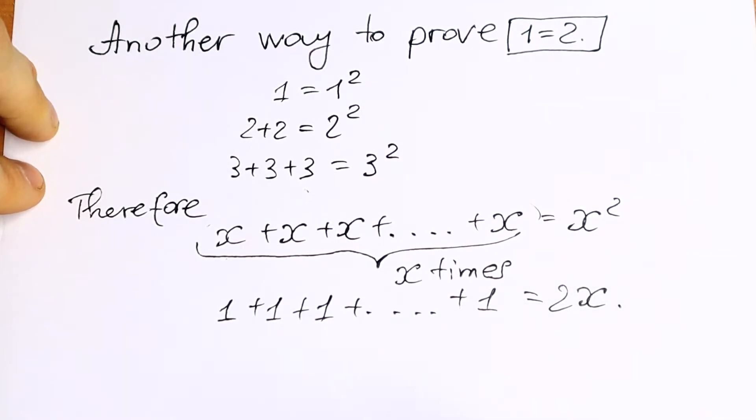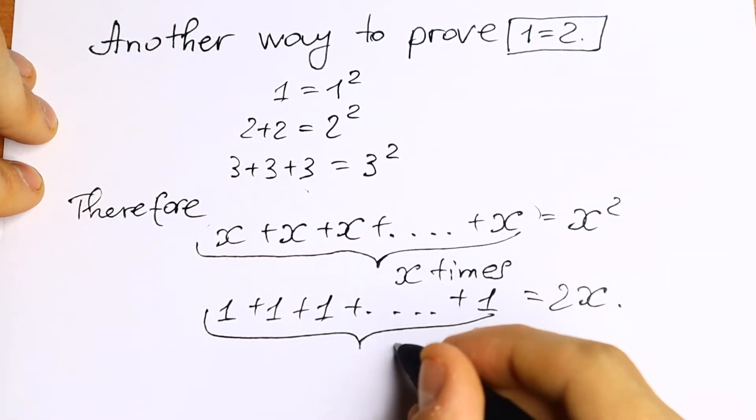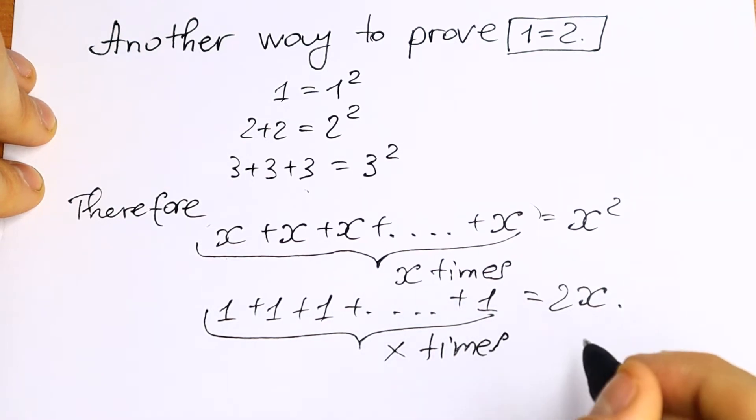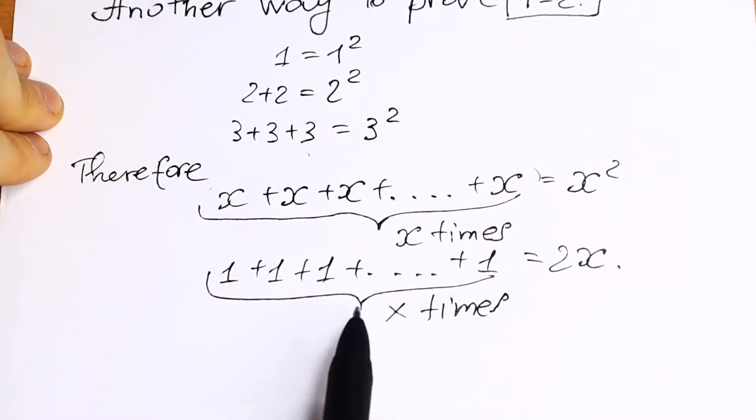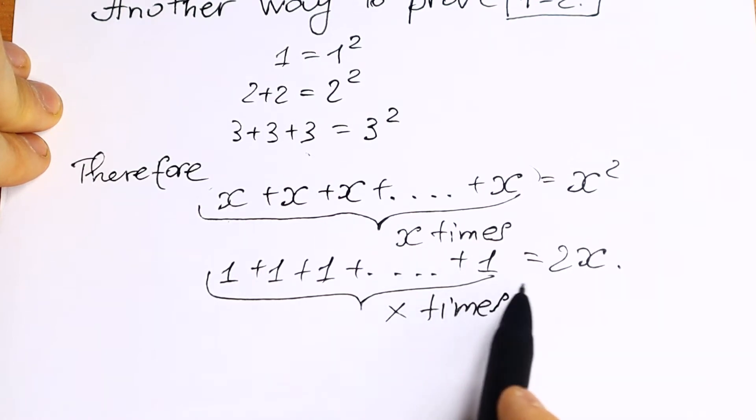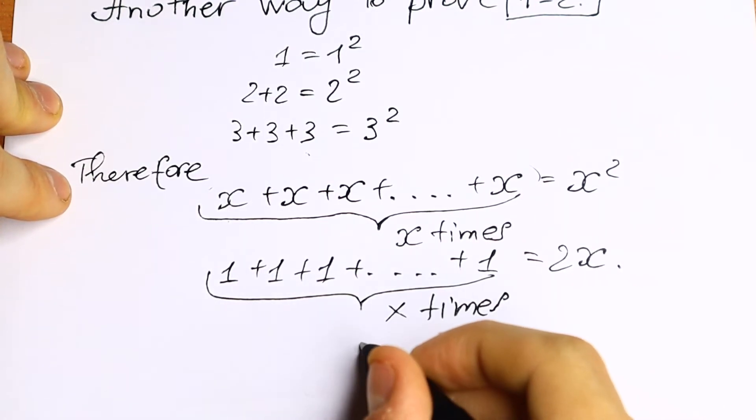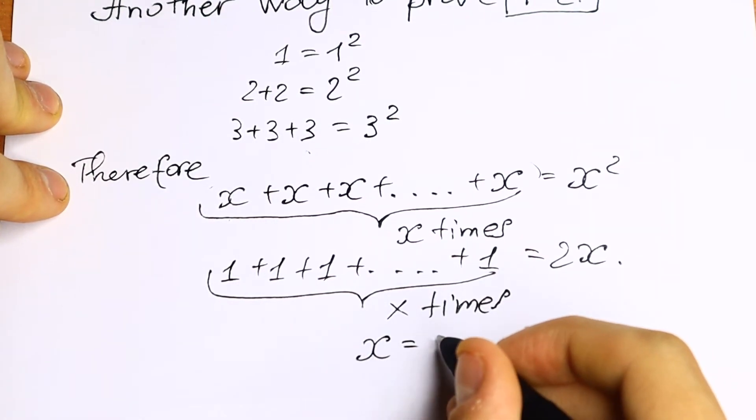So we're taking derivative from this sum and on the right we will have derivative to x. So as you can see we'll have x times as well right here. We will have 1 plus 1 plus 1 plus 1 x times.